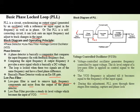The last component is the voltage control oscillator. In the VCO, it generates frequency controlled by the input voltage. The DC level output of the low pass filter is applied as a control signal to the VCO. This VCO is adjusted until it becomes equal to the frequency of the input signal. During this adjustment, the PLL goes through three stages: free running, capture, and phase lock.